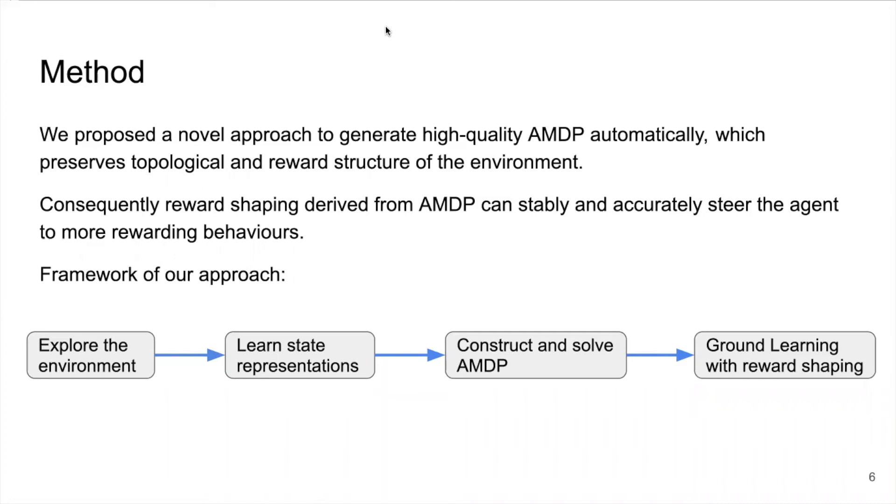In this work, we propose a novel approach to generate high-quality AMDP automatically, which preserves topological and reward structure of the environment. Consequently, the reward shaping derived from AMDP can stably and accurately steer the agent to more rewarding behaviors.